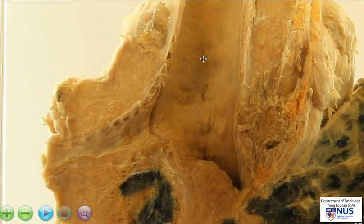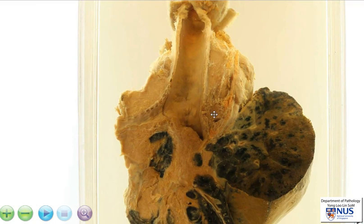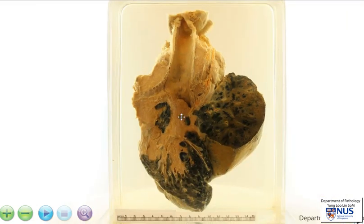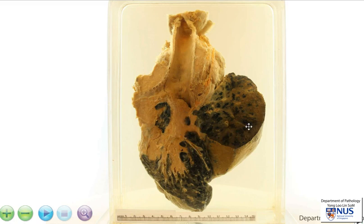Most likely these lymph nodes are involved by metastatic carcinoma. Of the histological types of lung carcinoma, usually small cell carcinoma and squamous cell carcinoma are more likely to occur in this region centrally. However, sometimes adenocarcinoma can also occur here. Adenocarcinomas tend to be more likely to occur peripherally, but as mentioned, they can sometimes be central as well.